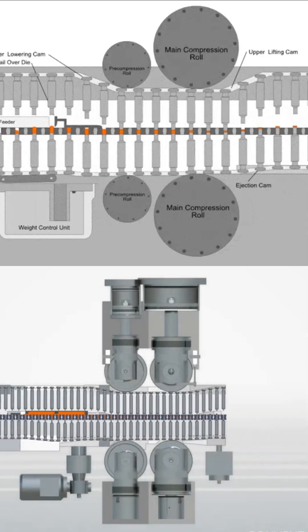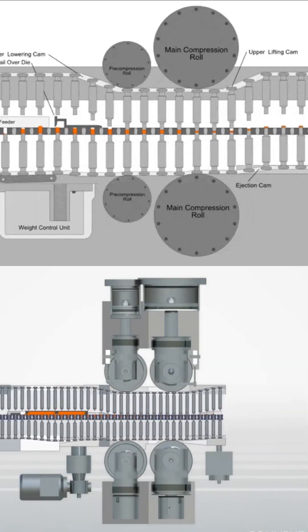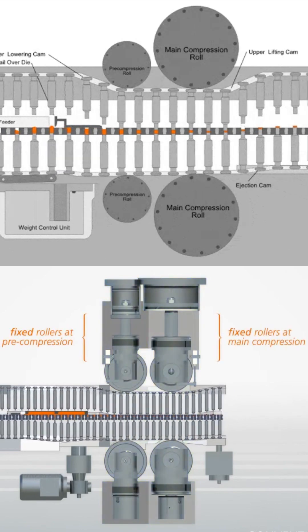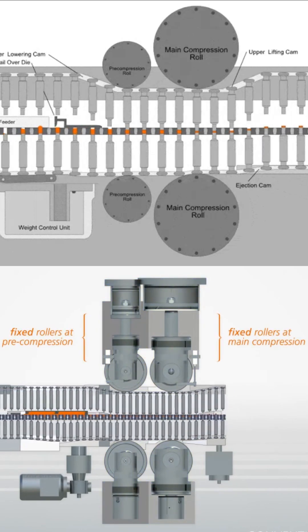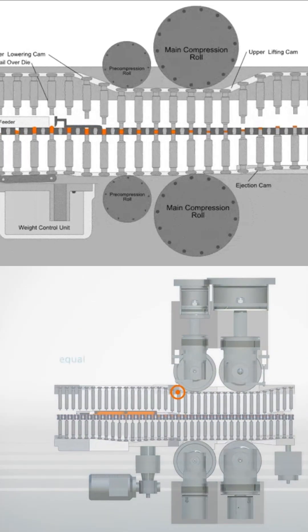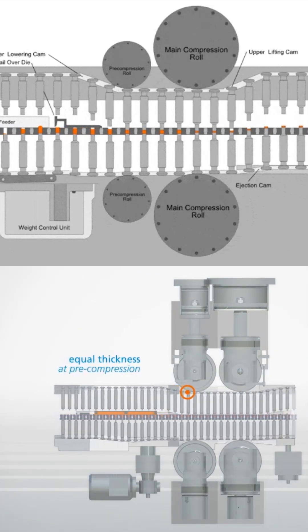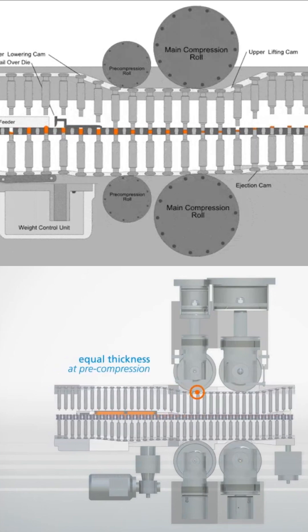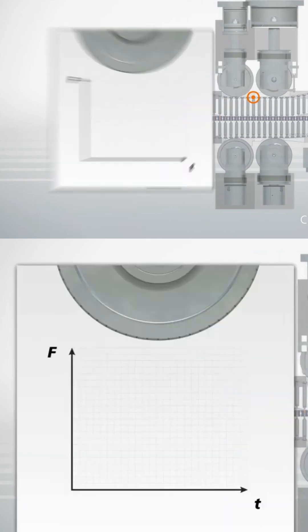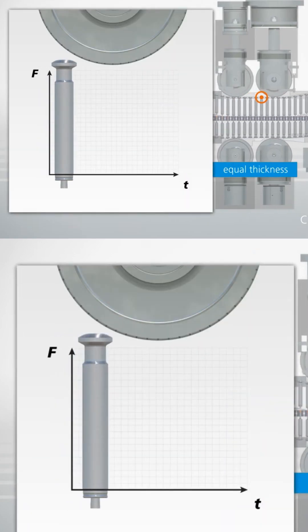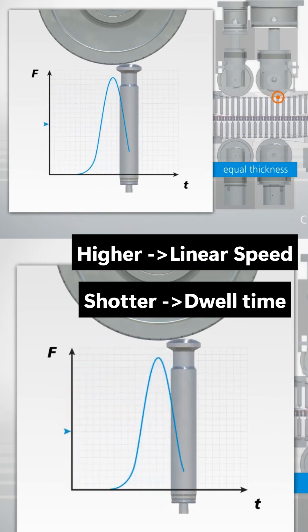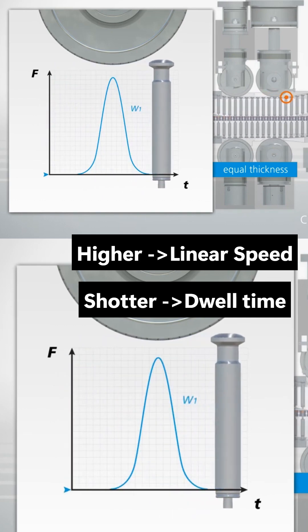The most common method of compressing powder into tablets is with both pre- and main fixed compression rollers. At pre-compression, the powder bed is de-aerated and the particles are rearranged. The dwell time, or the time during which the tablet is under maximum compression force, depends on the linear speed and the flat part of the punch head. The higher the linear speed, the shorter the dwell time becomes.